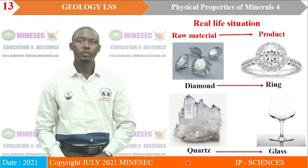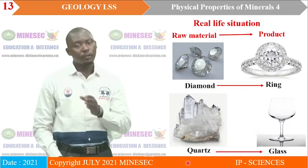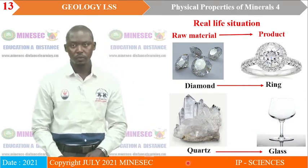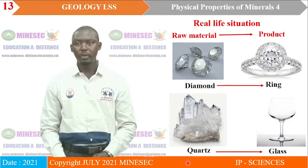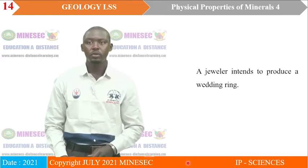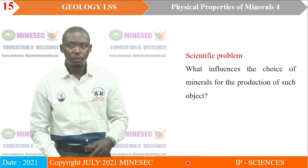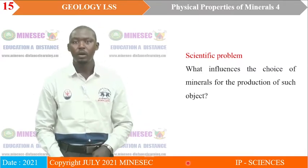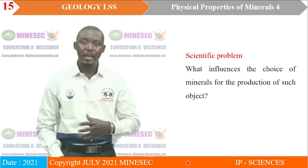We take a real-life situation. For every product, there is a raw material, and the choice of raw material depends on the purpose for which the object should be used. Here we have diamond — from it we can produce a ring. Quartz — from it we can blow glass. The scientific problem is: what influences the choice of a mineral for production of such objects? This problem is universal whenever we want to use minerals in our daily lives.